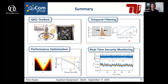To sum everything up: I first introduced our QKD testbed, where we tested methods to boost the performance of single photon based QKD systems via temporal filtering. We could show that for our system in a full implementation, range extensions of up to 10 dB would be achievable. In the last part, I also showed how we can use our methods for real-time security monitoring.